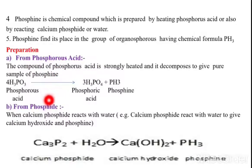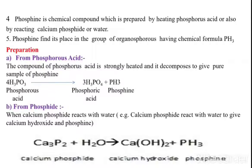In this reaction, the compound of phosphorous acid is strongly heated and it decomposes to give a pure sample of phosphine. Number two, from phosphide: when calcium phosphide reacts with water — that means this simple reaction — the calcium phosphide reacts with water to give calcium hydroxide and phosphine. These are the two most important methods for the preparation of phosphine.